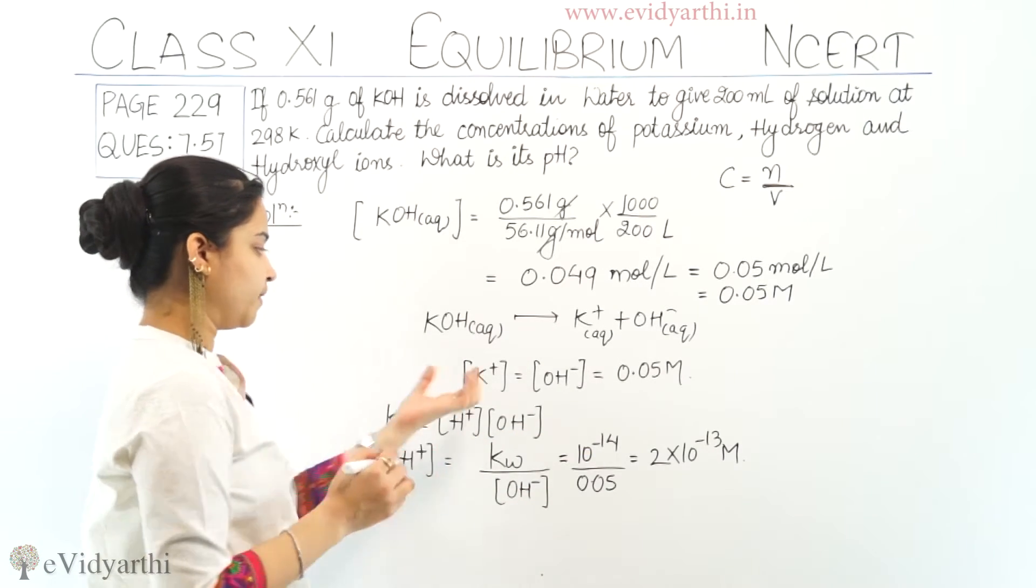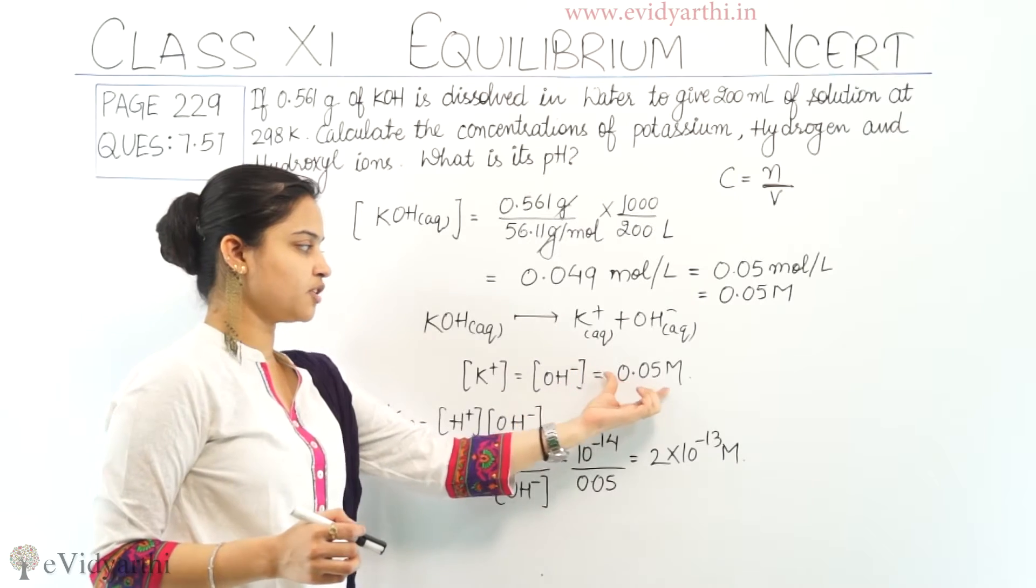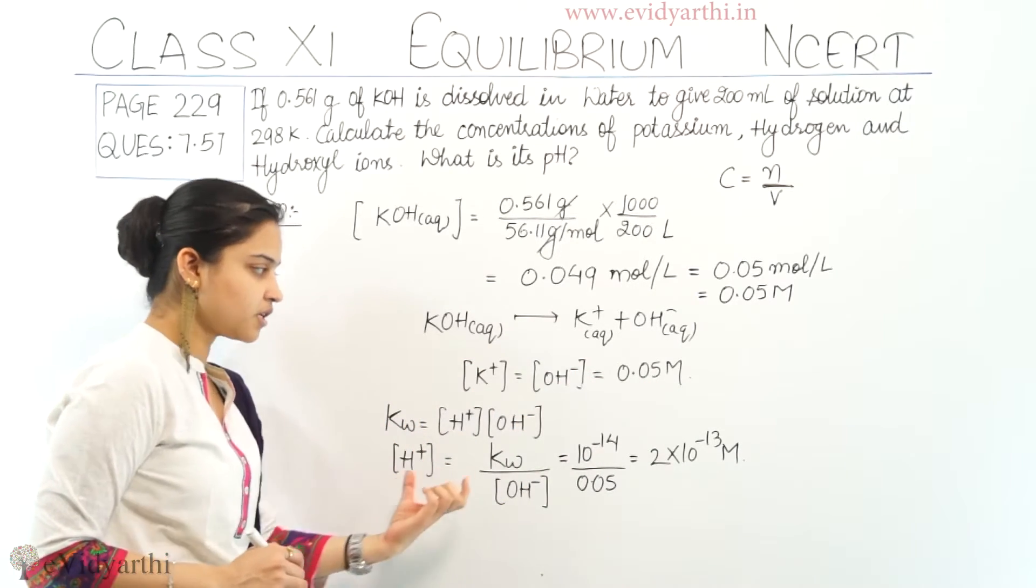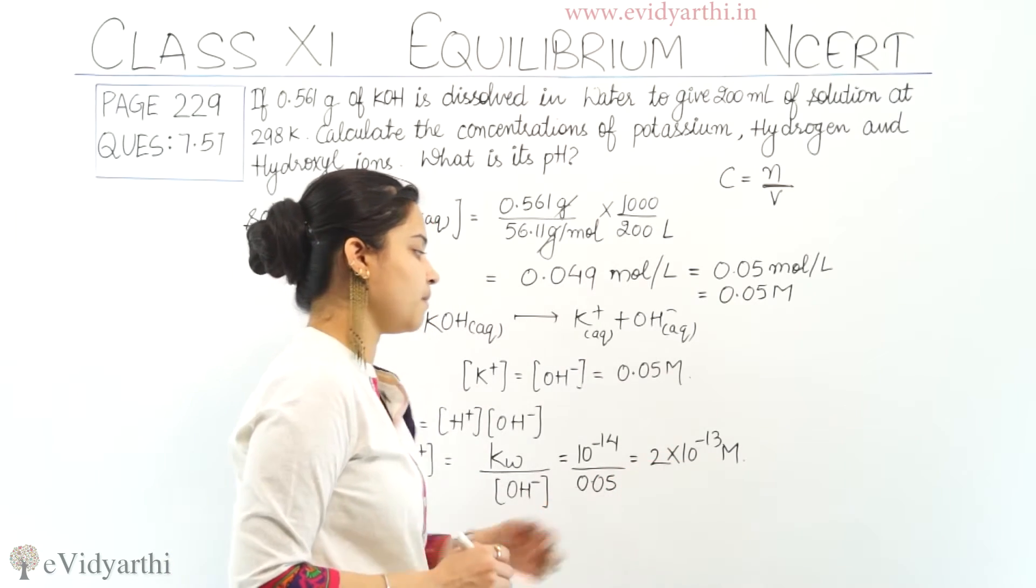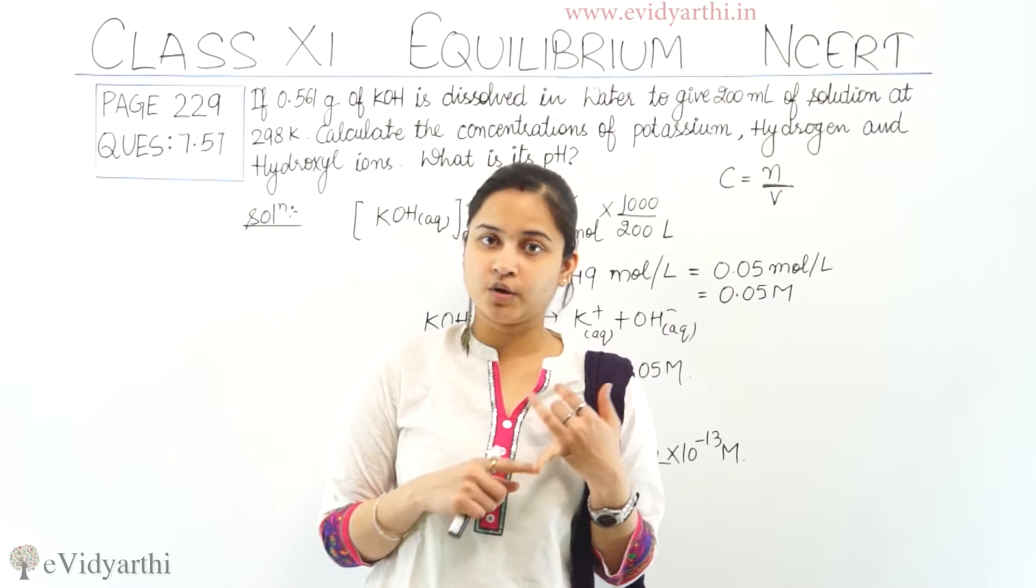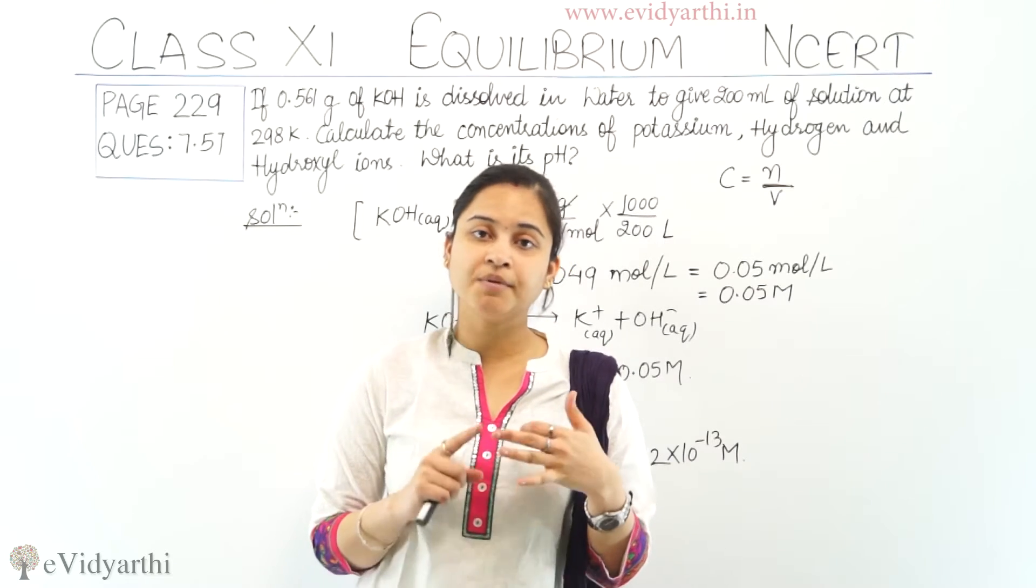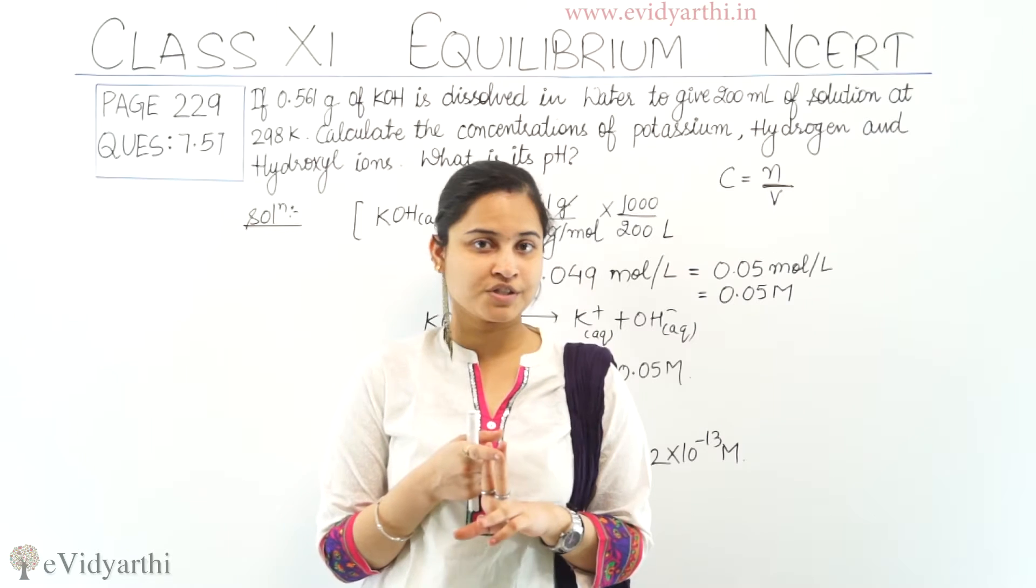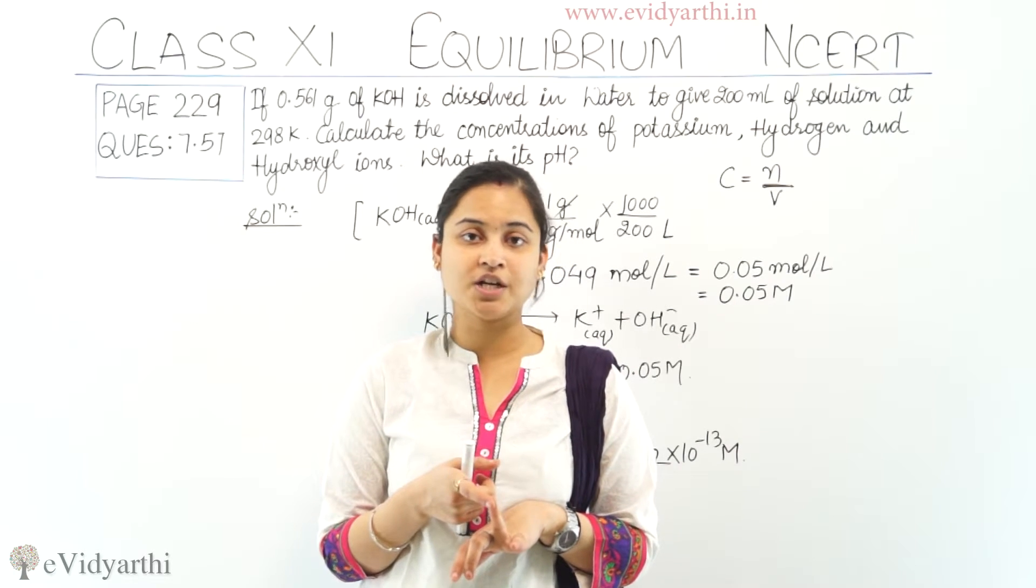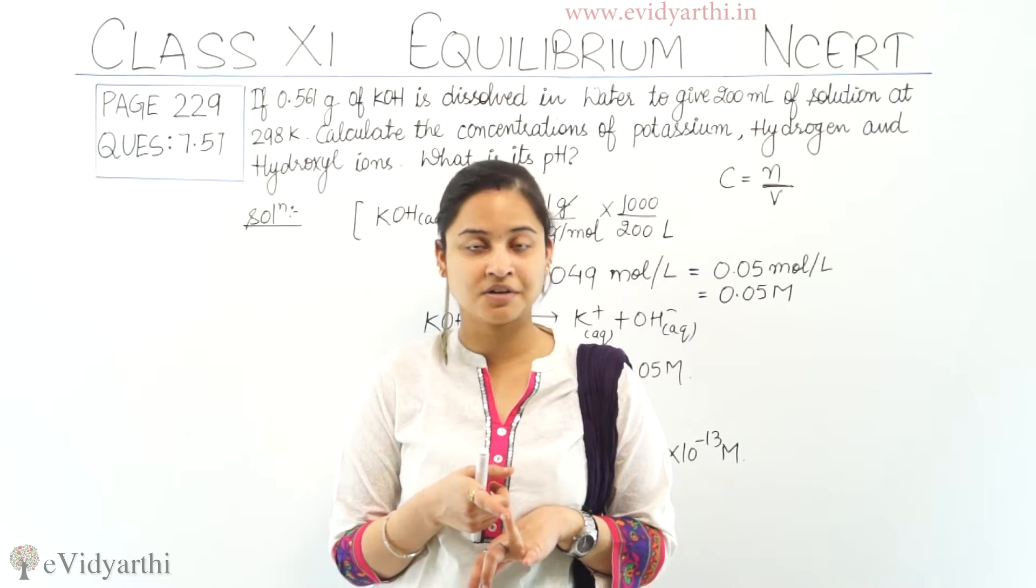That means the concentration of potassium and hydroxyl ion is equals to 0.05 molar. The concentration of hydrogen ion is equals to 2 into 10 raise to power minus 13. Ham ne tino hi concentration nikaal di hai. Hydrogen ion, hydroxide ion and potassium ion. Potassium and hydroxide ion ki concentration is 0.05 molar. Ar hydrogen ion ki concentration is 2 into 10 raise to power minus 13 molar.